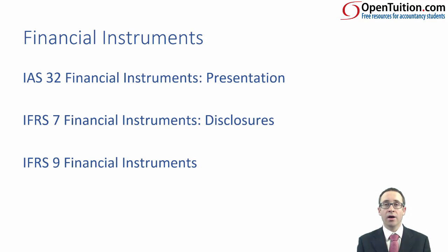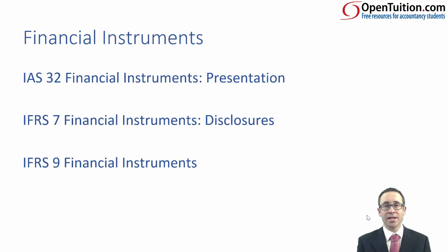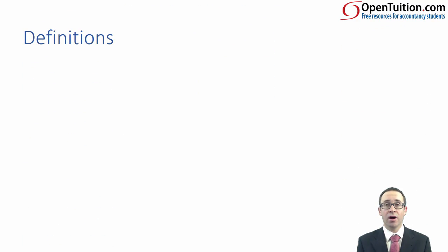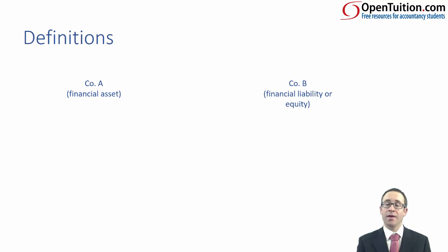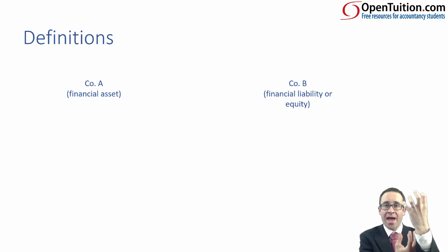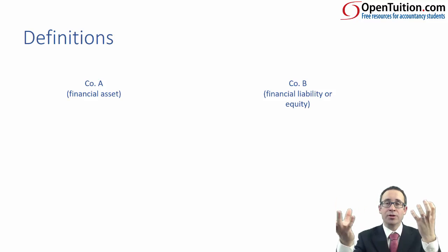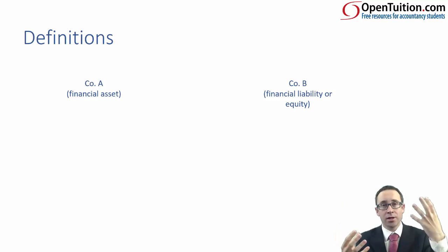There's quite a lot within IFRS 9, but for this introductory session we're just going to focus on what a financial instrument actually is and then begin to look at presentation. A financial instrument must give rise to a financial asset in one set of books, and a financial liability or equity in another company's set of books. You don't have the asset and liability in the same company's books — the asset is in one and the liability or equity is in the other.